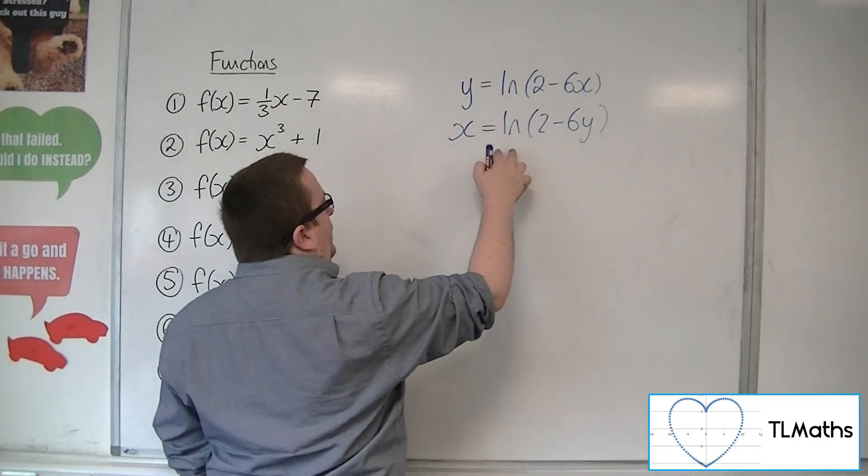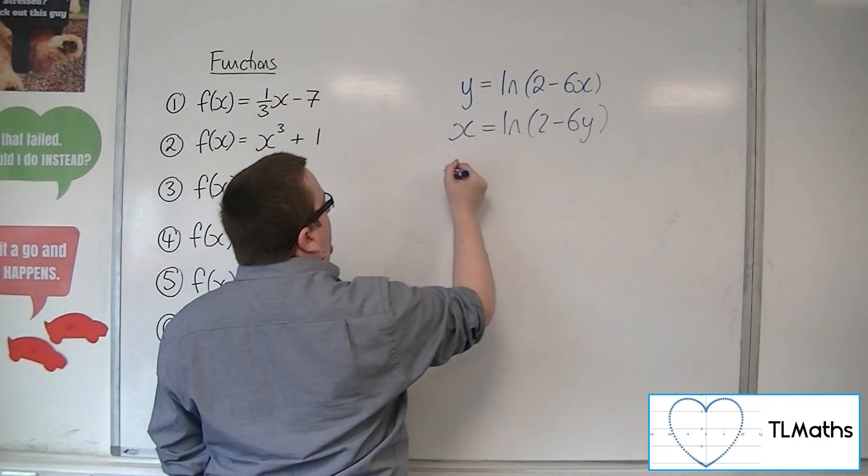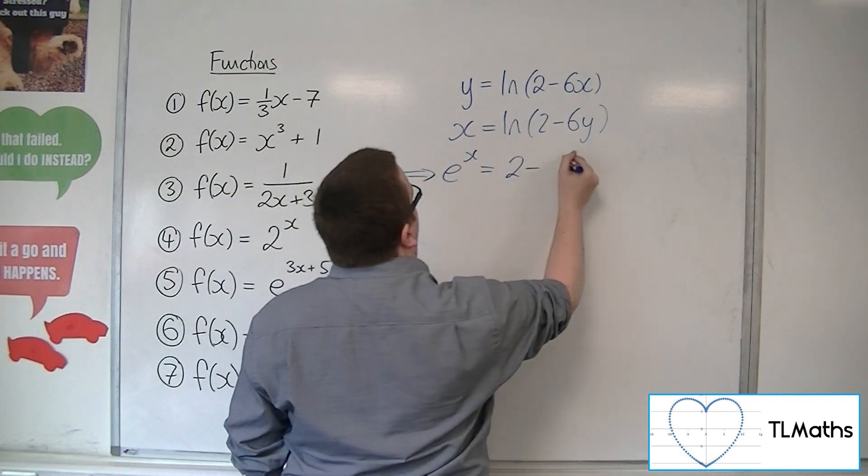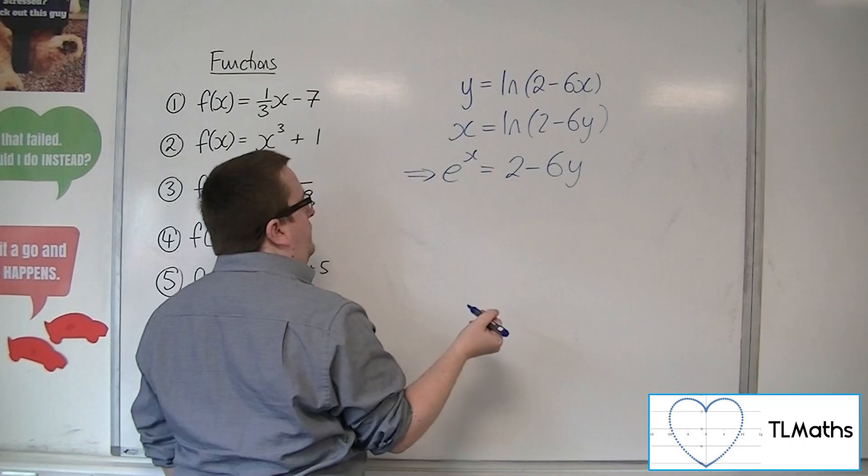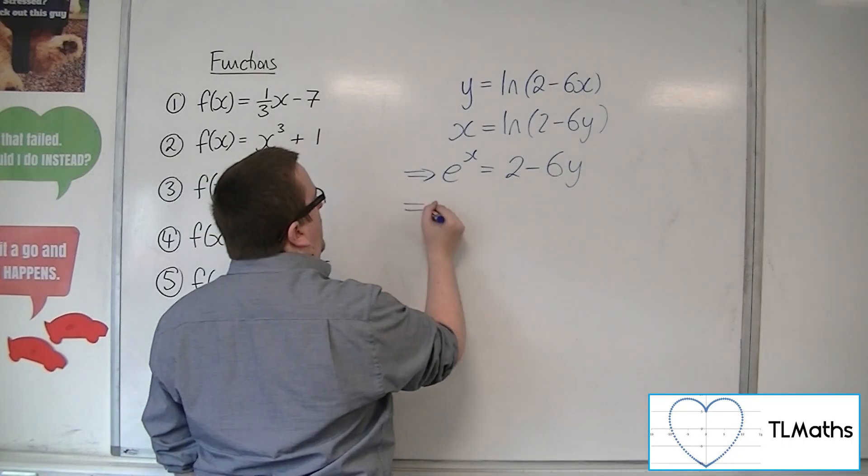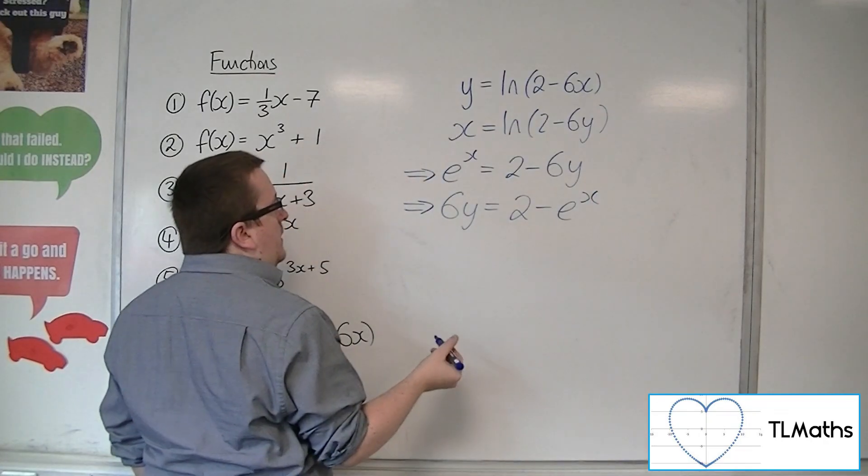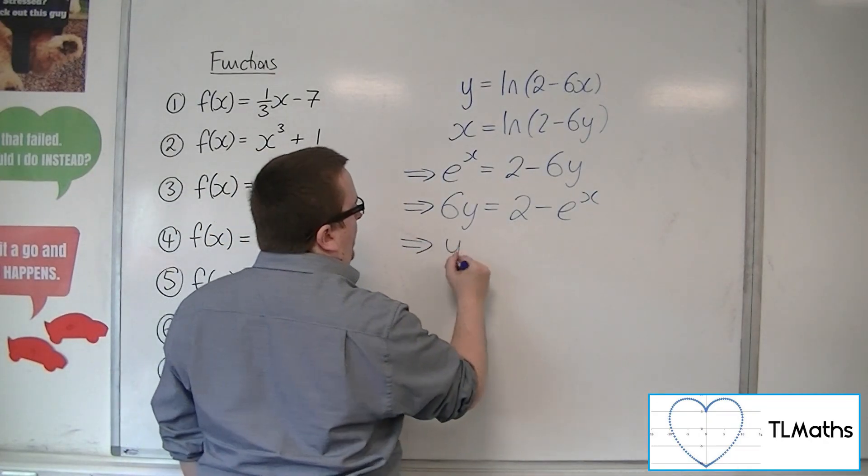Now, in order to get rid of the ln, the log, I'm going to e both sides. So eˣ = 2 - 6y. I'm going to add the 6y to both sides and subtract the eˣ from both sides. And then I can divide both sides by 6.